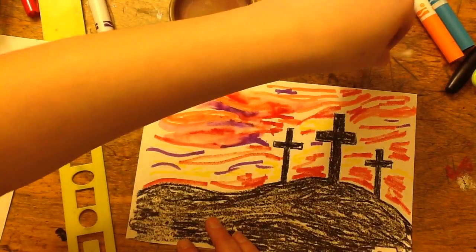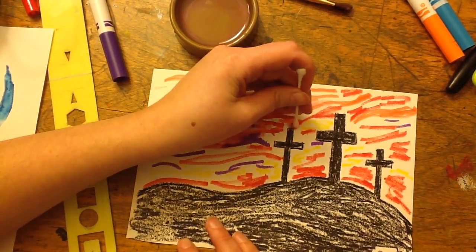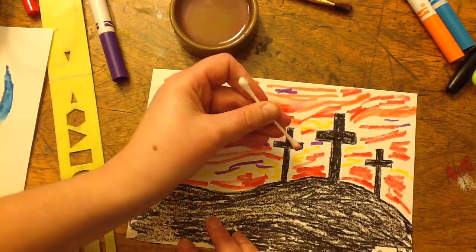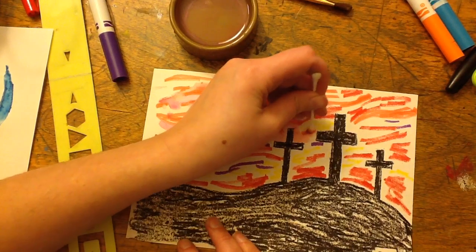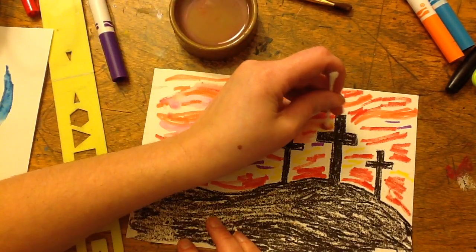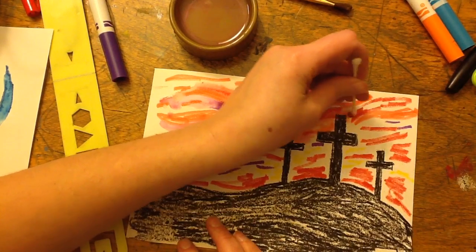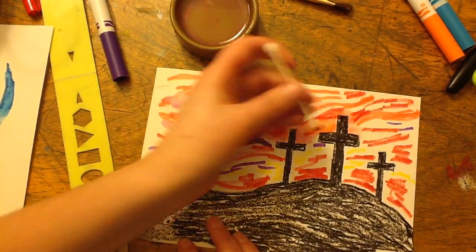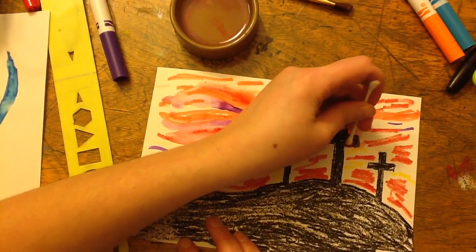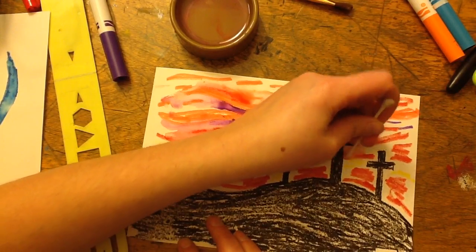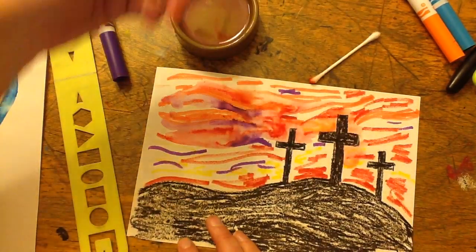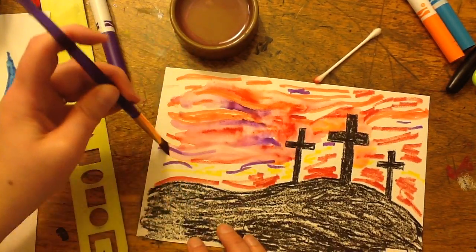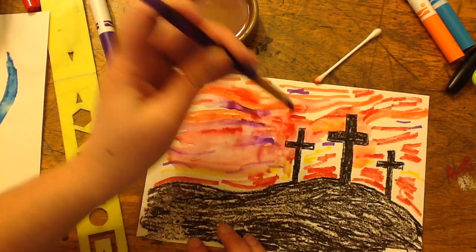I'm using my q-tip. Because my q-tip's so little, I sometimes feel like I have a little bit more control around my silhouette if I use this little q-tip. So I'm going to do all the spots that are right around my crosses and my hillside. Notice, even if I color over my cross with my q-tip, if I colored in really dark with my black crayon it's going to resist, so I don't have to really worry about painting over it. I'm going to switch to my big paintbrush.